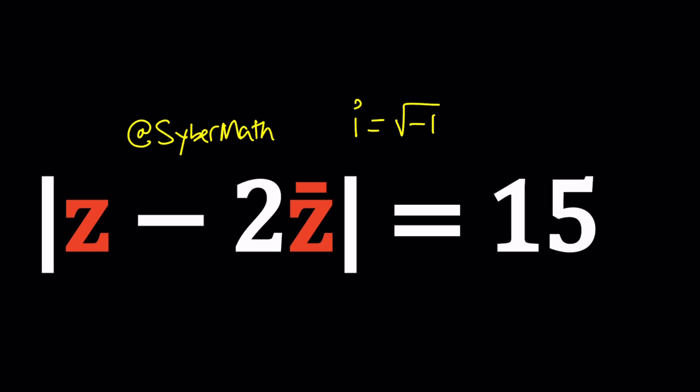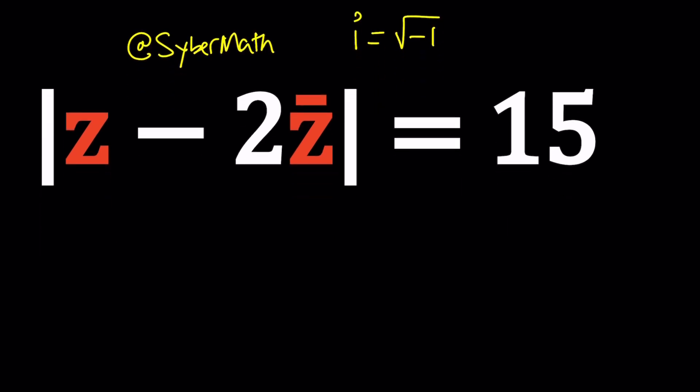We have the absolute value of something, so how do you write the absolute value of a number? If z = a + bi, then its absolute value is written as the square root of a² + b². You square the real part, square the imaginary part, add them up and take the square root. That's basically by the Pythagorean theorem.